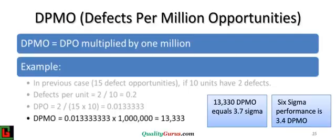In Six Sigma, we attempt to achieve 3.4 defects per million opportunities.